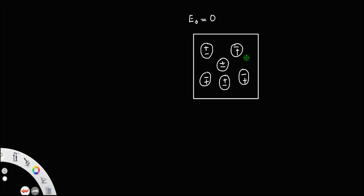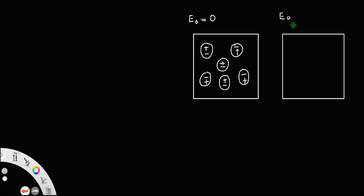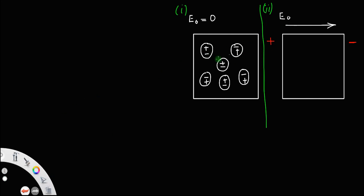Now, what will happen if you apply an external field? In the second case, the same slab — if I apply an external field from left to right, an electric field is always directed from positive charge to negative charge. When you apply an electric field, here it is positive and here it is negative, so the molecule will split like this.